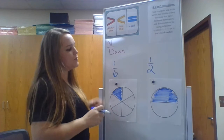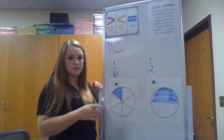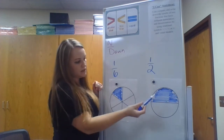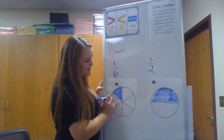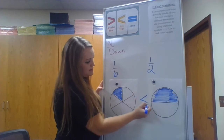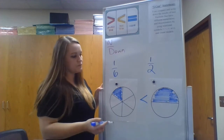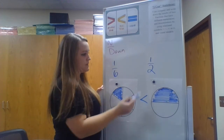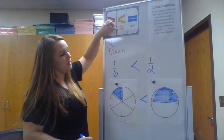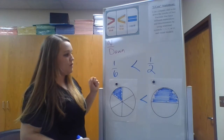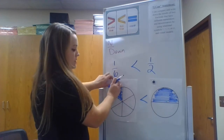By looking at these two pies, you can definitely tell that one has more than the other. Which one do you think it is? That's right — this one has more. So 1/6 is less than 1/2. The answer to this one is 1/6 is less than 1/2. If you need to refer up here to the less than symbol to see which way it faces, that's more than okay. So this is one way we can go ahead and model it.